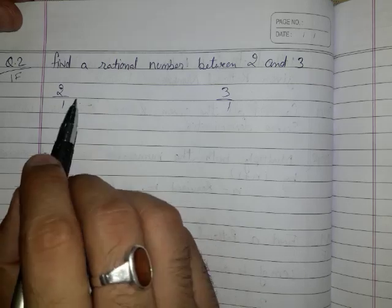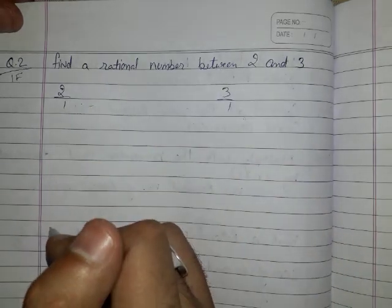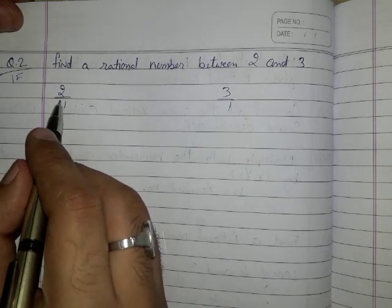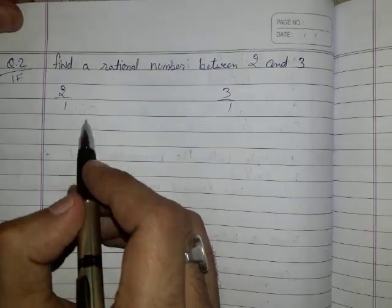So our first step which is to make the denominator same, we can skip that step. So we will move to step number 2 in which we will multiply both the numerator and denominator with n plus 1.